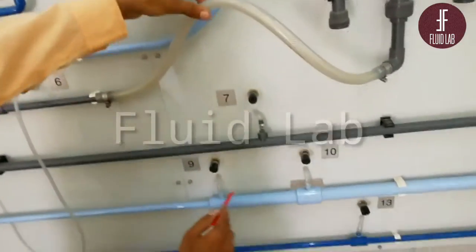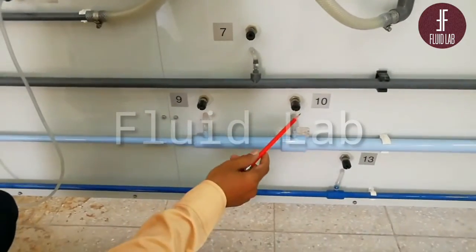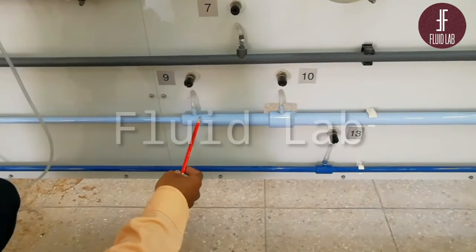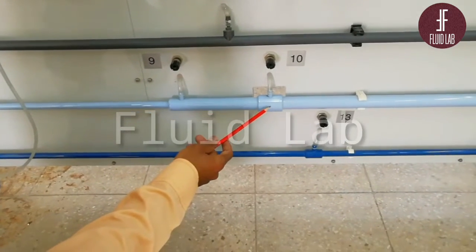You can see taping 9 and 10. Here is occurring sudden expansion from 9 to 10. The diameter of 9 is less than the diameter of taping 10.